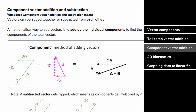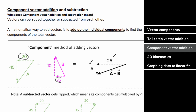Another, more mathematical way of adding vectors is by simply adding up their individual components. To find the total vector a plus b, instead of graphing them tail to tip, you find the horizontal and vertical components separately. To get the total horizontal component, add the horizontal component of a, which is negative 20, and the horizontal component of b, which is negative five, to get negative 25.